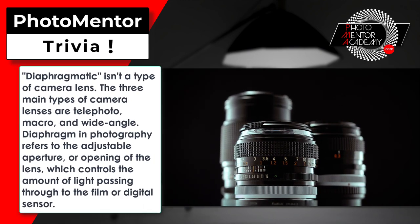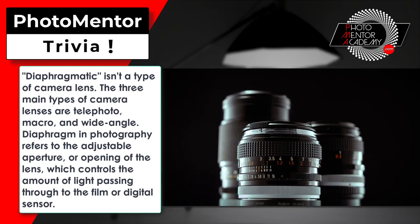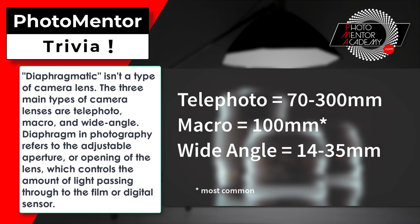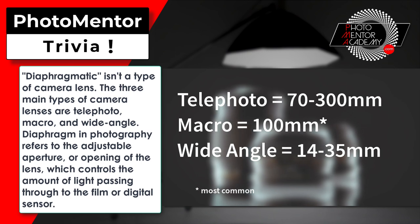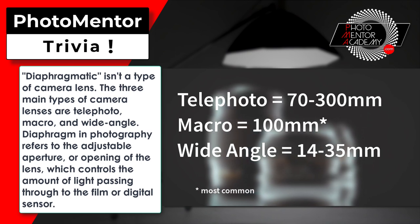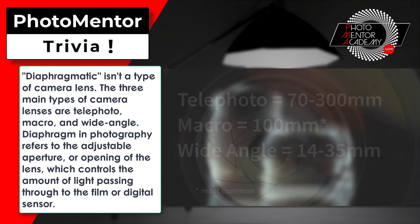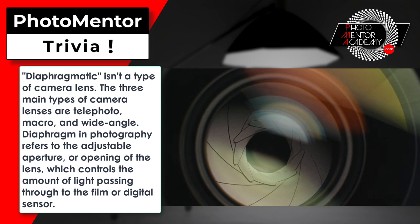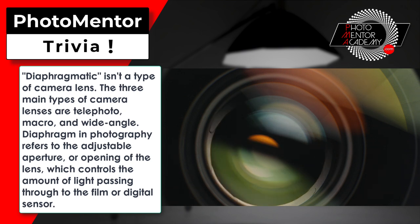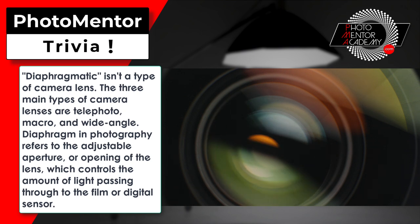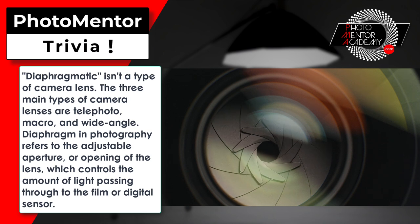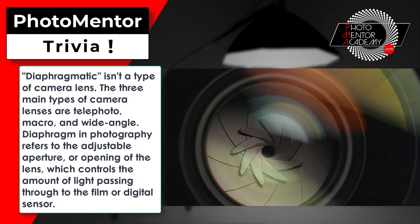Diaphragmatic isn't a type of camera lens. The three main types of camera lenses are telephoto, macro, and wide angle. Diaphragm in photography refers to the adjustable aperture, or opening, of the lens, which controls the amount of light passing through to the film or digital sensor.